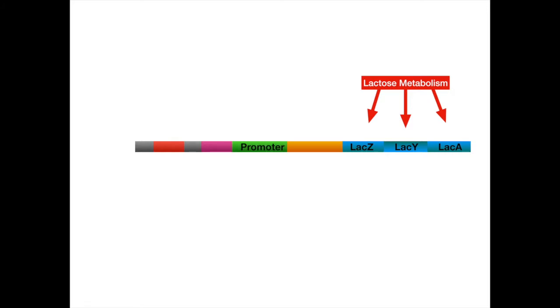Further upstream, you have the promoter. The promoter is the region that the RNA polymerase will bind to and move downstream, where it encodes for the three lac genes.